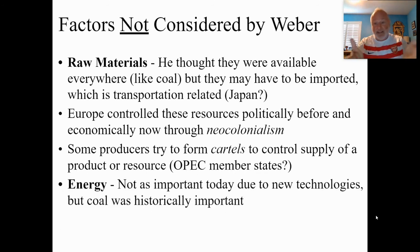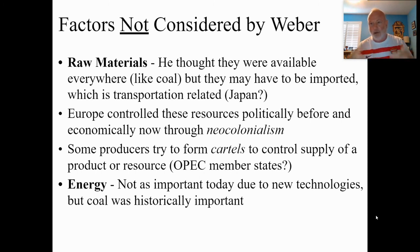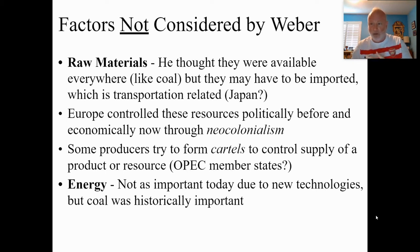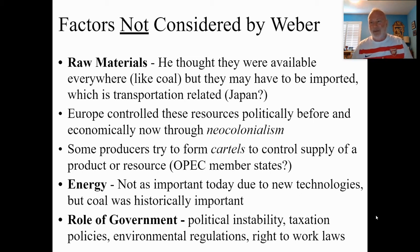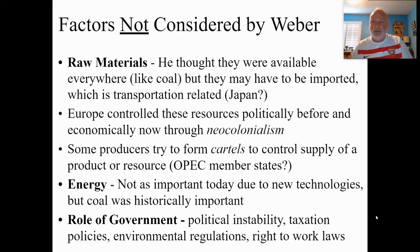Cartels sometimes form to control supply and demand of key commodities. OPEC — the Organization of Petroleum Exporting Countries — controls oil. Energy sources have shifted away from coal due to climate change and global warming; many countries have committed to carbon neutrality by 2030–2040. Walmart and Amazon have pledged carbon neutrality. Government plays a key role: environmental regulations, political instability (like Myanmar's military coup), and taxation all affect manufacturing decisions.